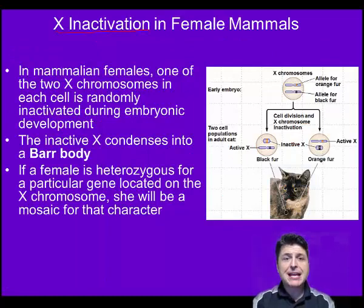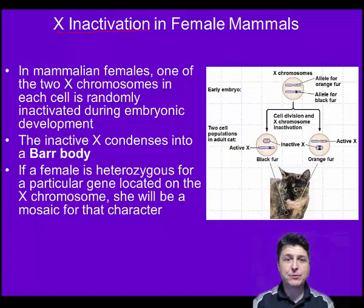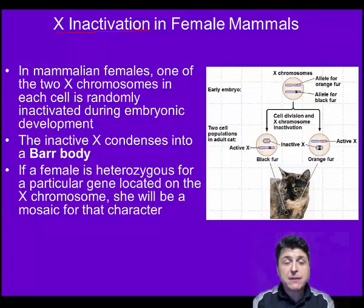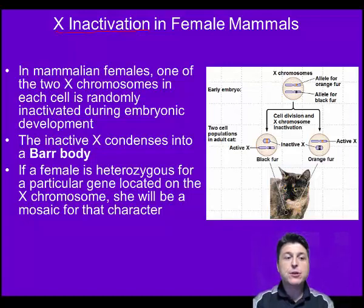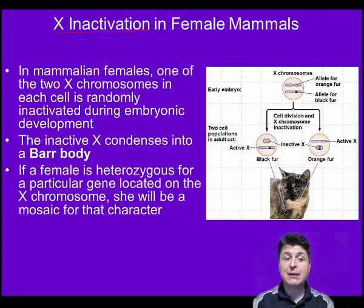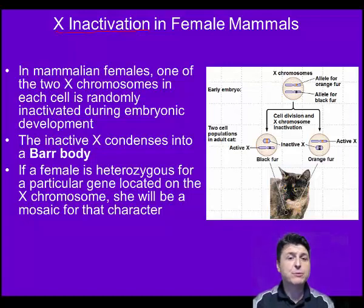Another factor which affects gene expression is a process known as X-inactivation in female mammals. In order for mammals to be genetically female, they inherit two X chromosomes. In these mammalian females, one of the two X chromosomes in each cell is going to be randomly inactivated during embryonic development. The inactive X condenses into a structure which we refer to as a Barr body.